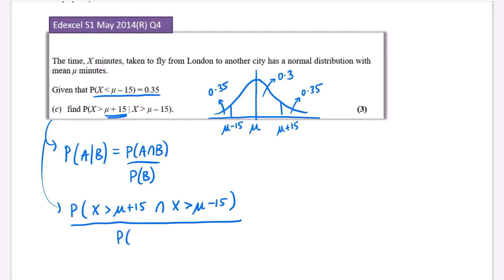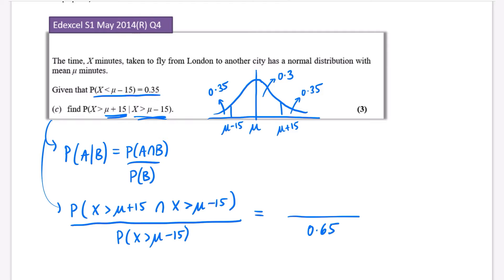Let me work out the denominator first: the probability that X is greater than mu minus 15. We know that the probability of being less than mu minus 15 is 0.35, so the probability of being greater than mu minus 15 covers the middle section and right tail, which is 0.65.